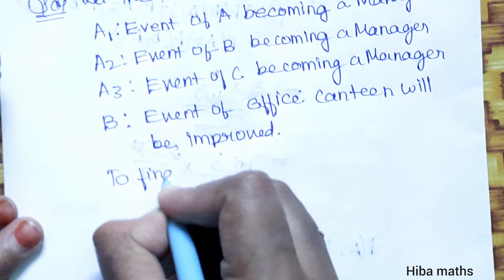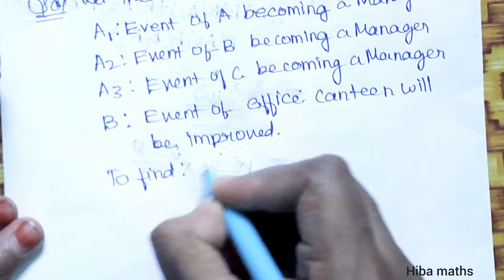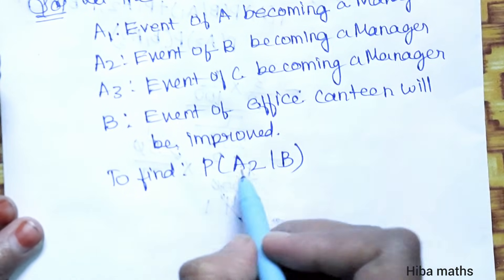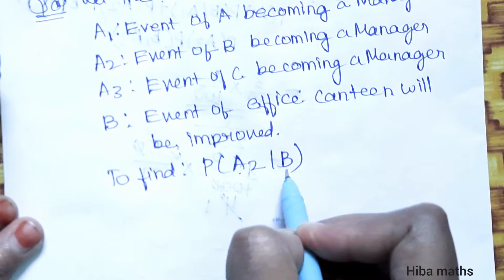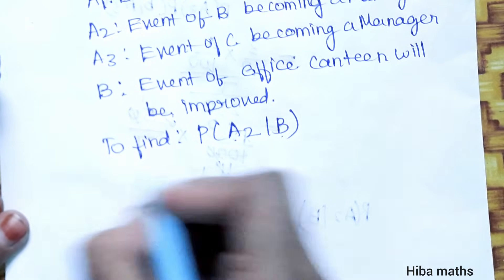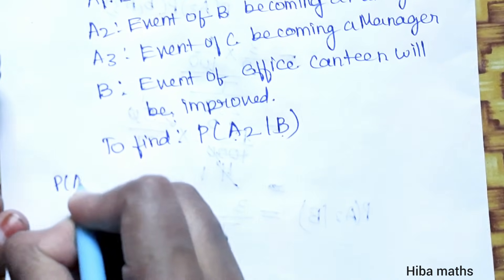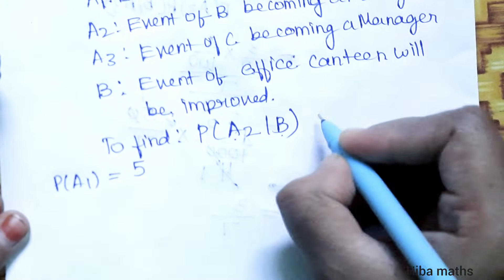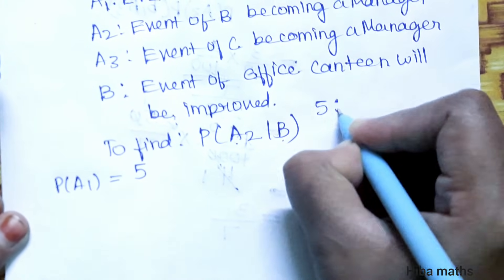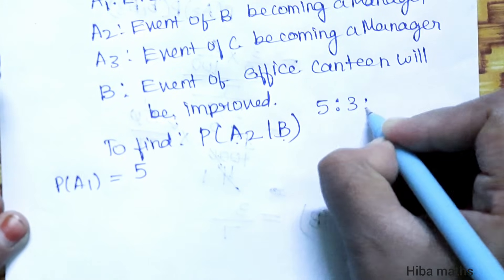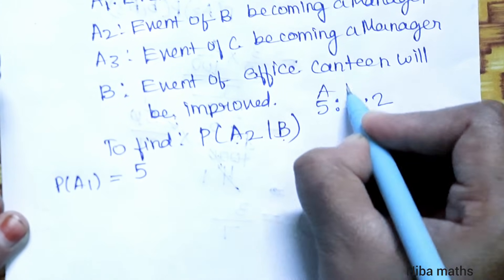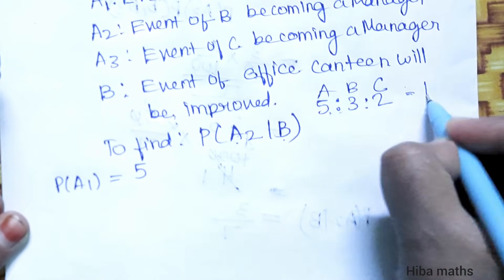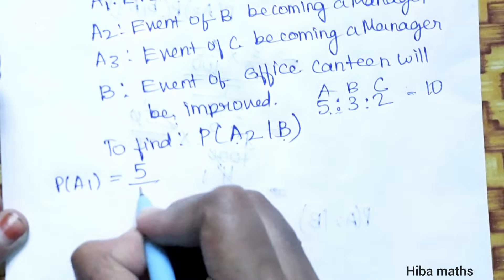We need to find P(A2|B), the probability that B was the manager given the canteen improved. The prior probabilities: the ratio is 5 to 3 to 2, total is 10. So P(A1) = 5/10, P(A2) = 3/10, and P(A3) = 2/10.